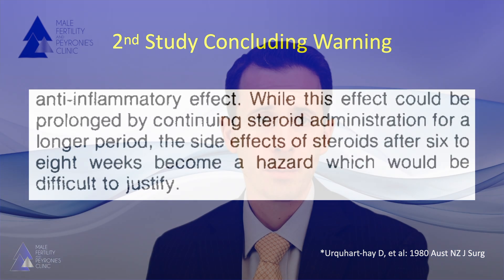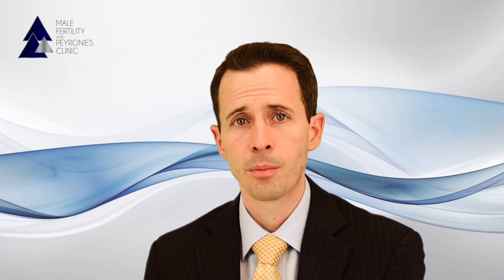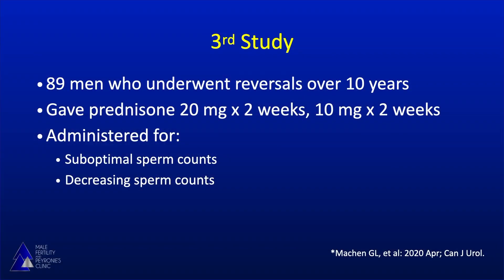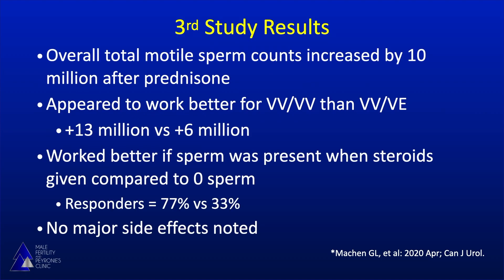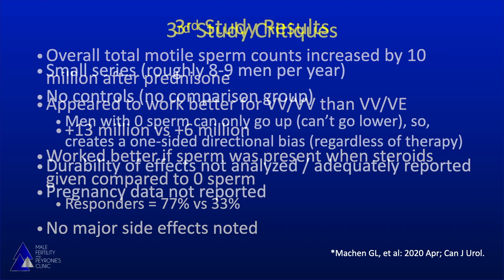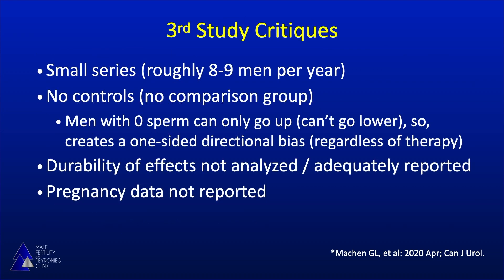A third, more recent study was published in the Canadian Journal of Urology in April 2020. The authors reviewed 89 men who underwent reversals over a 10-year period and received steroids for low or declining sperm counts — 20 mg daily for two weeks, then 10 mg daily for two weeks. Overall, total motile sperm counts increased by about 10 million. Men who had some sperm did better than those with a zero count. However, improvements only persisted while patients remained on steroids, there was no true control group, and with only nine patients per year, this study rates as a level four on the evidence scale — intriguing, but not conclusive.